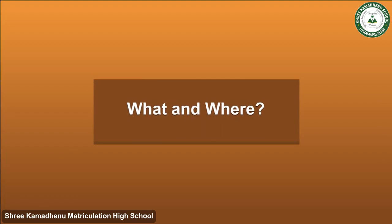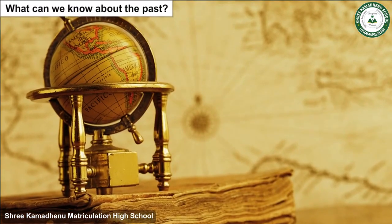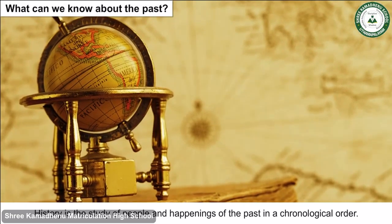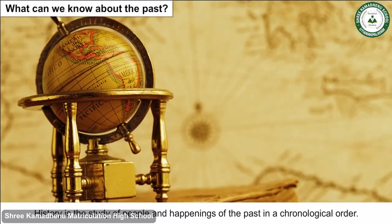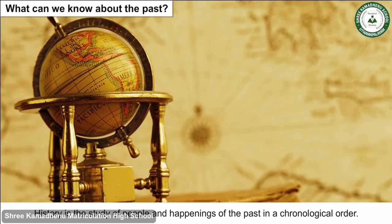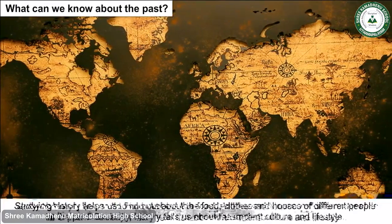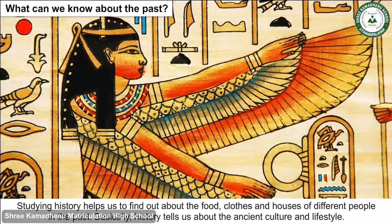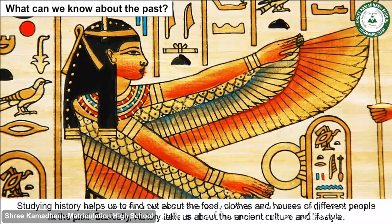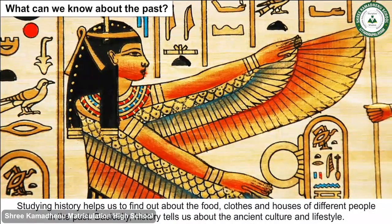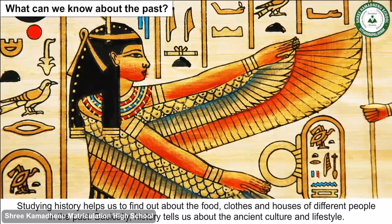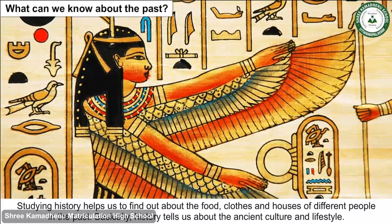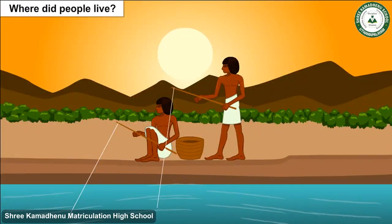What can we know about the past? History is the study of people and happenings of the past in a chronological order. Studying history helps us to find out about the food, clothes and houses of different people in the past. Basically, history tells us about the ancient culture and lifestyle.